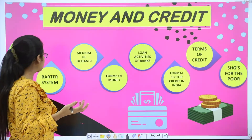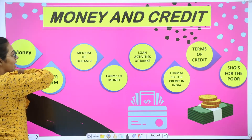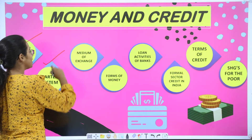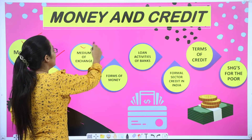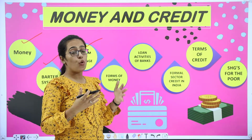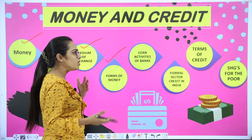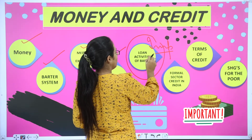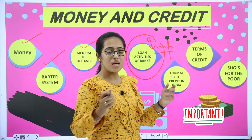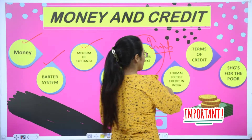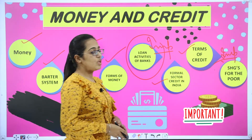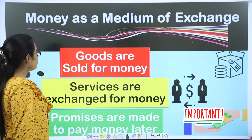Loans are a form of credit. Here is a glance of what all we are going to cover in this chapter: what money is, what the barter system is, money as a medium of exchange, different forms of money, loan activities — how loans are taken, where banks get money from — formal sector, terms of credit, assets, and self-help groups.